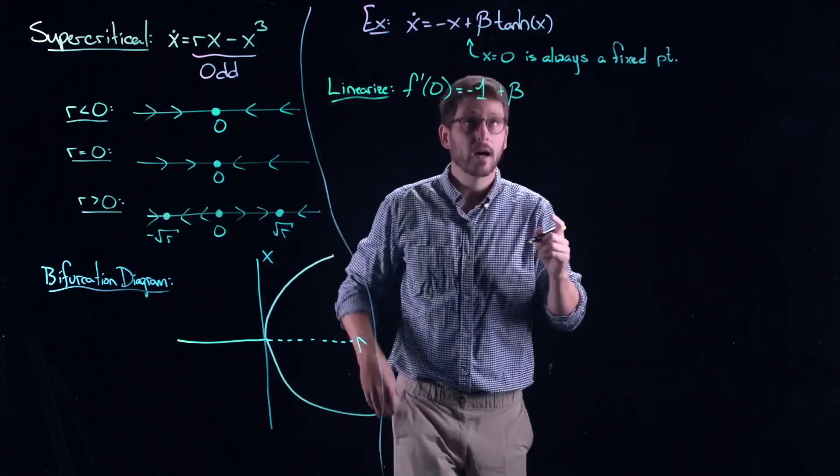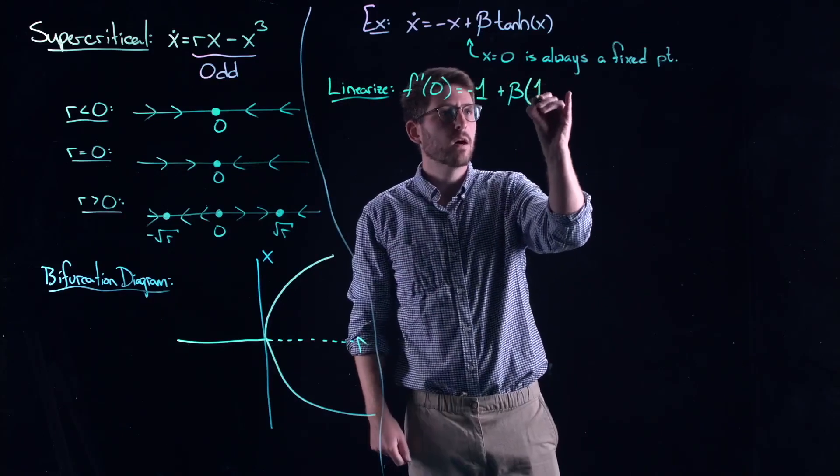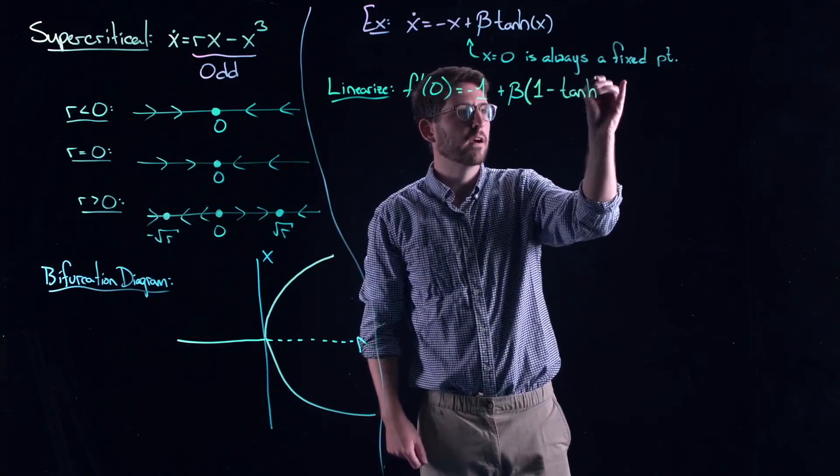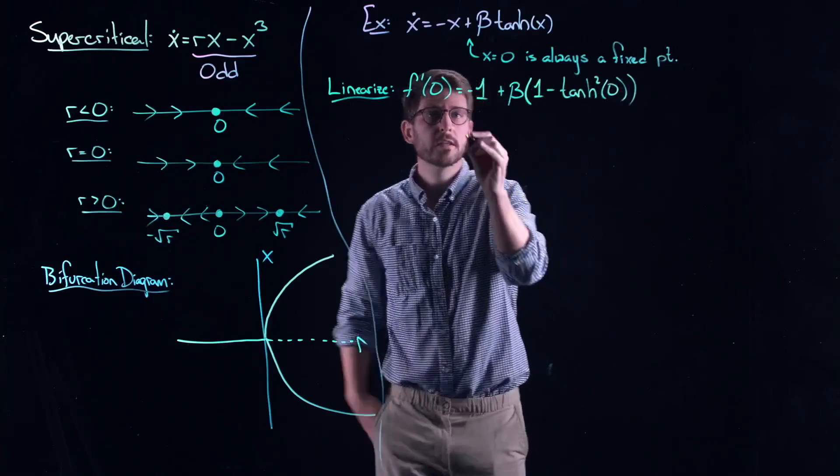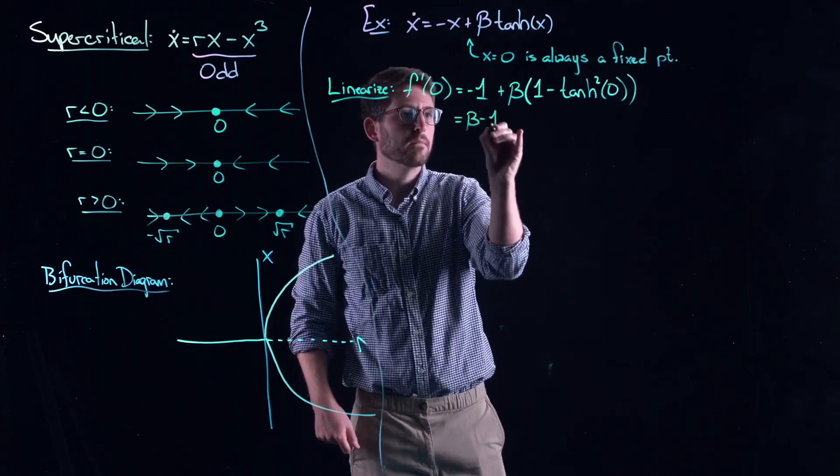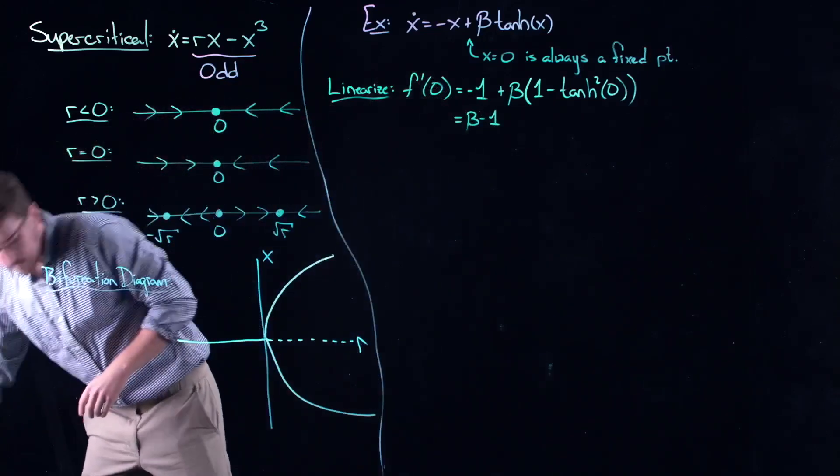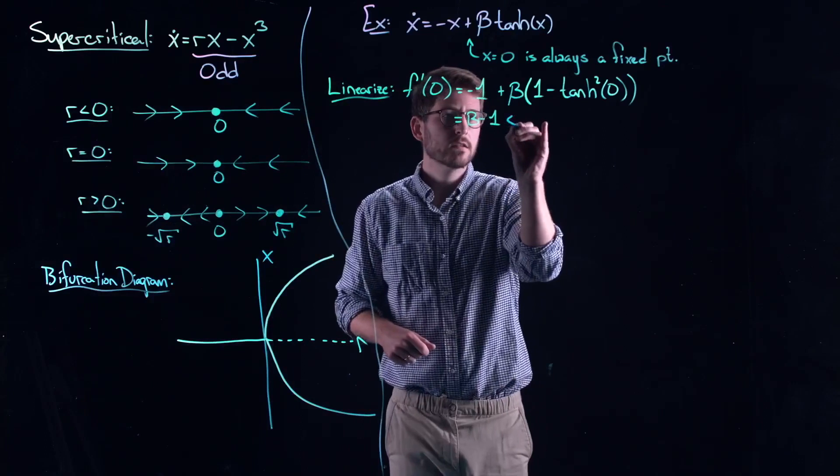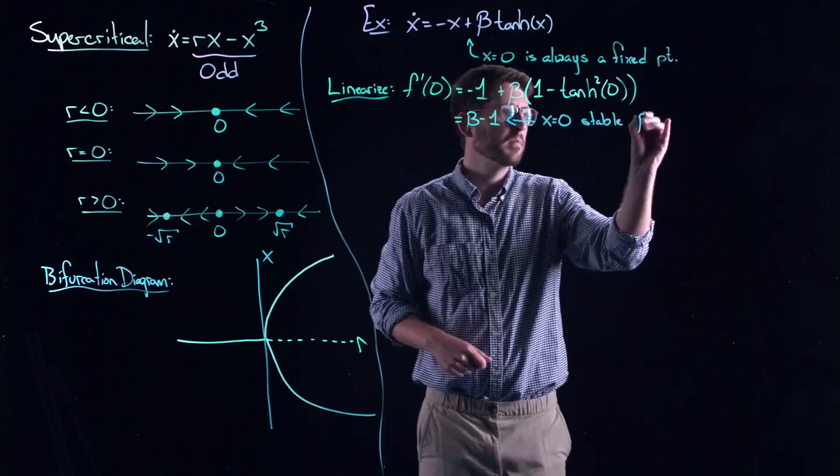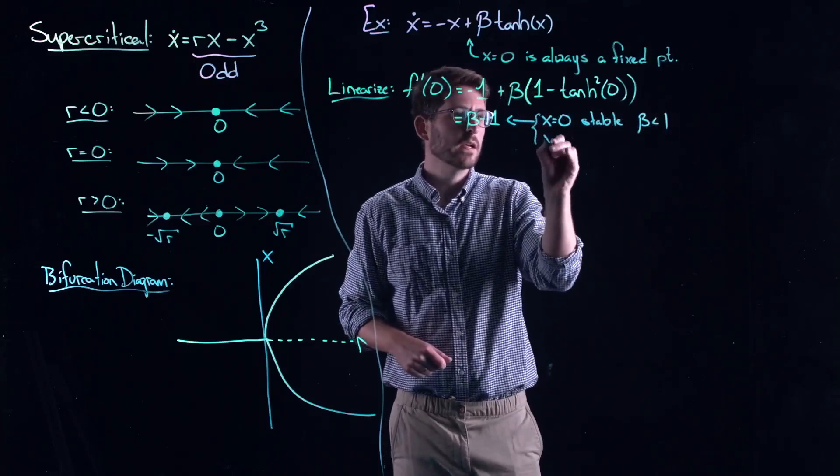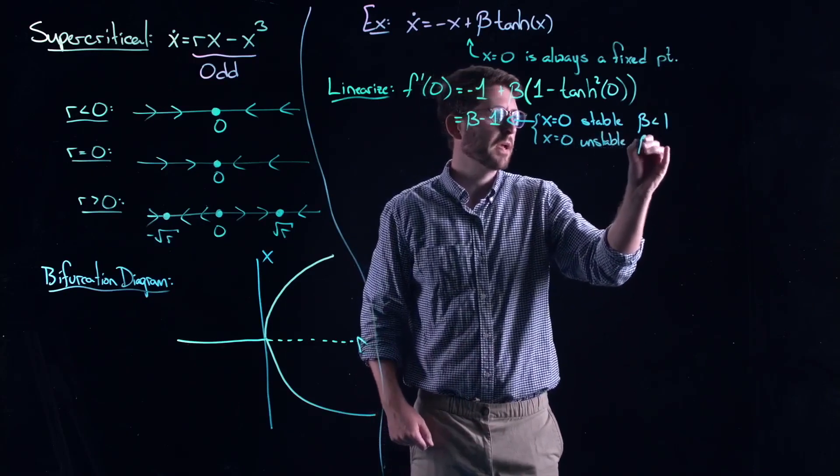So, this is going to be minus one plus beta. And the derivative of the hyperbolic tangent, you might have to look this one up. It's actually one minus the hyperbolic tangent squared and then evaluated at zero. And so, that's equal to zero and this gives me a nice beta minus one.